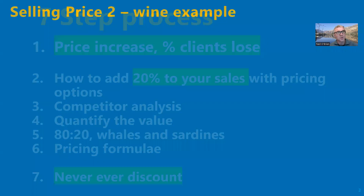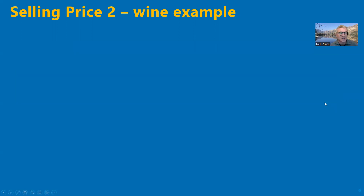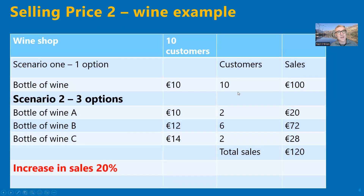The third thing I'm going to show you is pricing options. Imagine a scenario where 10 customers go into a shop looking to buy a bottle of wine. The shop only has one option — a bottle of wine for 10 euros. The 10 customers buy it and sales are 100. Now imagine another scenario where 10 customers go into a shop that has three price points: a bottle of wine for 10, one for 12, and one for 14.